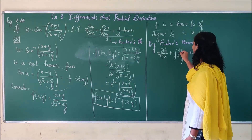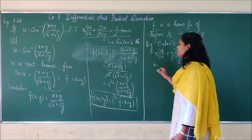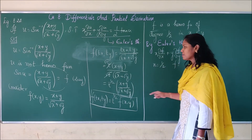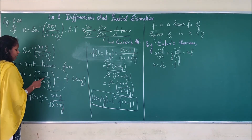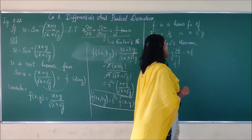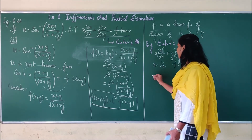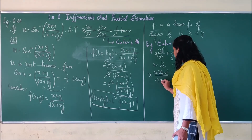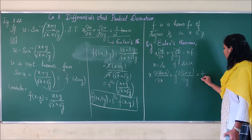So now I am going to substitute f = sin(u) into my Euler's theorem. Therefore: x · ∂(sin u)/∂x + y · ∂(sin u)/∂y = (1/2) · sin(u). Now I am going to differentiate this to convert it into x ∂u/∂x + y ∂u/∂y. I have sin(u), so I need to differentiate sin(u) partially with respect to x and partially with respect to y. Since u is a function of x and y, I will use the chain rule.